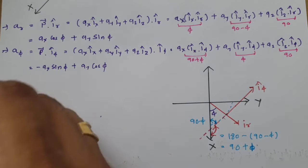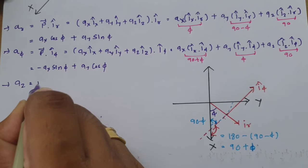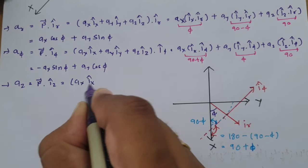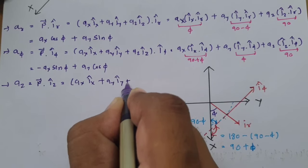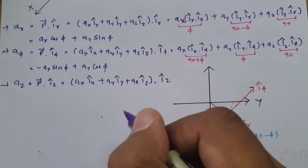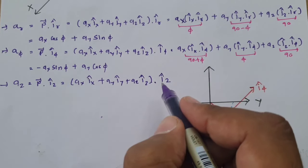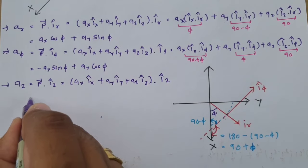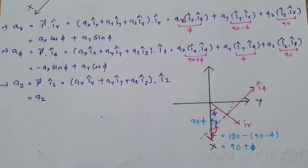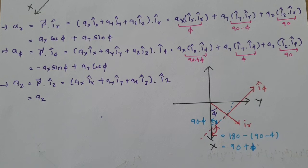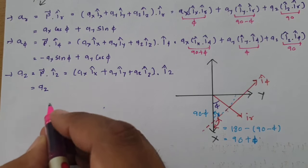For AZ: AZ = P · IZ = (AX·IX + AY·IY + AZ·IZ) · IZ. Since IX·IZ = 0 and IY·IZ = 0, and IZ·IZ = 1, we get AZ = AZ. So the Z component remains unchanged. We now have all three components: AR, Aφ, and AZ, which we need to remember for solving examples.